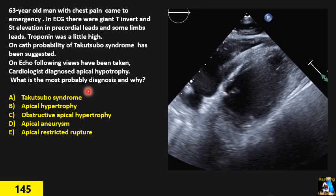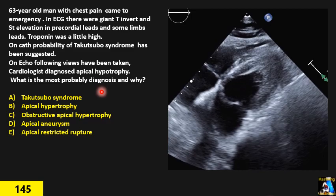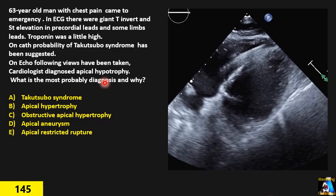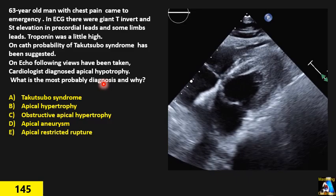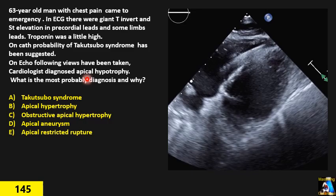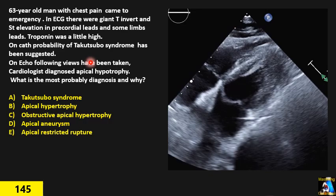We have a patient, a 60-year-old man with acute coronary syndrome, who came to the emergency department. On the EKG they found giant T-wave inversions and ST elevation on precordial leads and some limb leads. Troponin was a little elevated. Based on some other risk factors, the patient was sent right away to the cath lab.